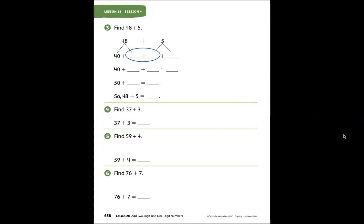Lesson 28, Session 4, page 658. Find 48 plus 5. Here we have the number 48. We need to break it into expanded form: 48 equals 40 plus 8.